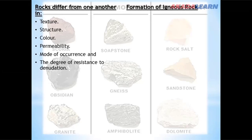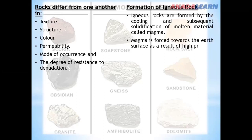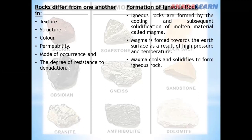Igneous rocks are formed by the cooling and subsequent solidification of molten material called magma. Magma is forced towards the earth's surface as a result of high pressure and temperature. Magma cools and solidifies to form igneous rock.